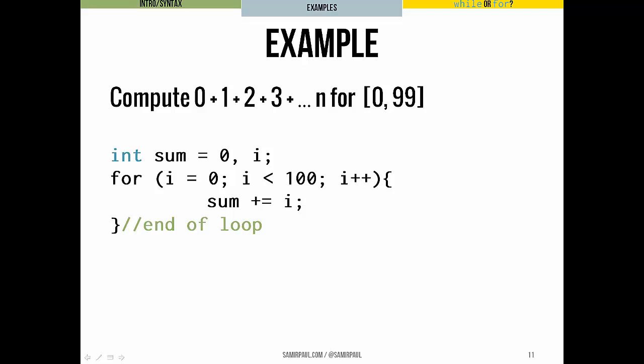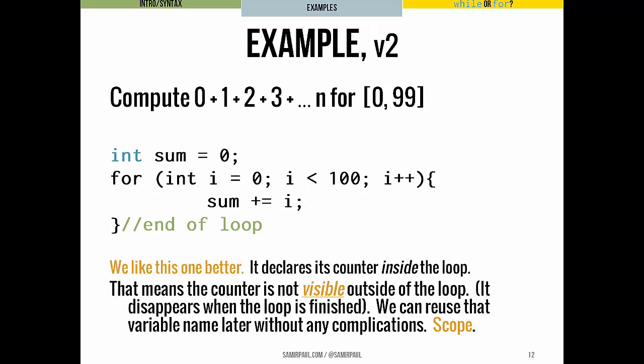Now, we can change something slightly about this. You'll notice that our counter is declared outside of the loop. We could also change it so that we declare our counter inside the loop, right here. So rather than declaring int i out here, we declare int i inside the structure of the loop. We like this a little better. Declaring the counter inside the loop, generally, we find that to be a little bit better for our needs.